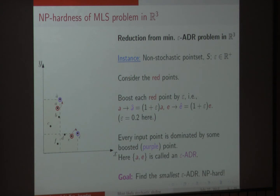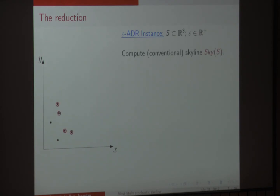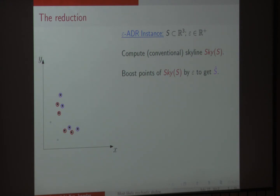We're going to use this for our proof of the most likely skyline problem. We start with any epsilon-ADR instance, a set of points in R3. We generate an instance for the MLS problem by first computing the conventional skyline, sky(S), shown in red, for the given set of points. Then we boost each of the points in the skyline by epsilon to get a set of purple points. Notice that the two black points are dominated.